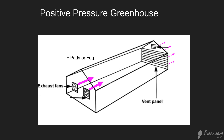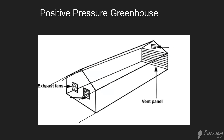Or you can use a pad system similar to the negative pressure setup, but in this design the fans push air through the evaporation pad. Another way to do it is to place the pads outside the fans, and have the fans pull air through the evaporation pads.